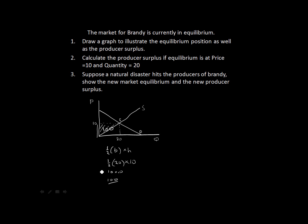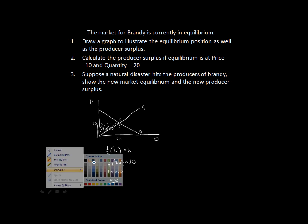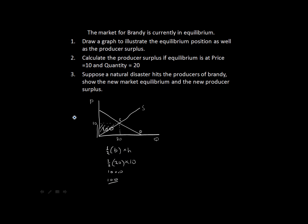As simple as that. So the next question, I'm just going to change the color of a pen here, states that suppose a natural disaster hits the producers of brandy. Show the new market equilibrium and the new producer surplus.